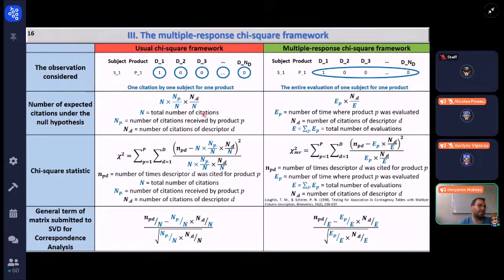These differences in observation impacts the number of expected citations we have under a null hypothesis. As you can see here in the usual chi-square framework, this expected citation depends on the number of citations we have by the product, which means that the propensity of a product to elicit more citations has an impact on the number of expected citations, which shouldn't be, as the number of expected citations is only a function of the probability of a descriptor to be cited in a single evaluation, and also the number of times a product was evaluated.